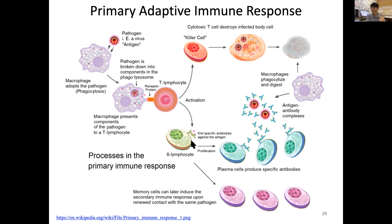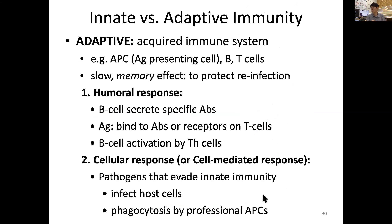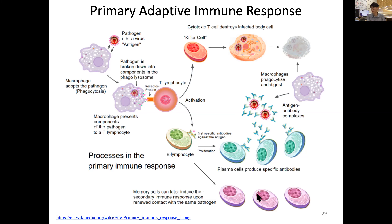On the other hand, some portion of these B lymphocytes differentiate into memory cells. Memory cells are not for the current response but for the future — they later induce a secondary immune response upon renewed contact with the same pathogen. They are like reserve forces specific to this antigen. This is essentially what happens when we vaccinate: we generate many of these memory cells to protect ourselves from a future attack by those specific viruses.